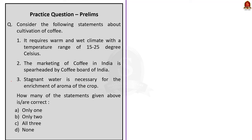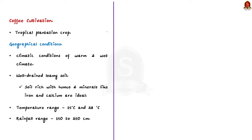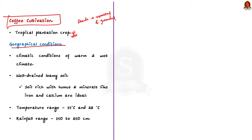Consider the following statements about the cultivation of coffee. We shall always see a question from the economic geography part covering cultivation of crops like coffee, tea, cotton, etc. Coffee is a tropical plantation crop whose seeds are roasted, ground and used as a beverage. The geographical conditions for coffee cultivation include warm and wet climate, and well-drained loamy soil rich in humus and minerals like iron and calcium.